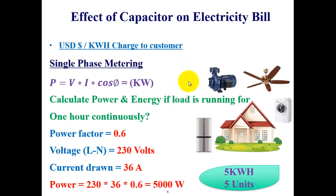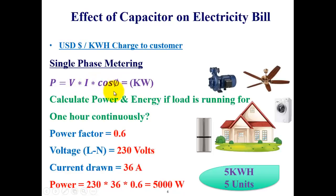Let me explain with a basic example. With no capacitor installed across the supply, consider a house where the voltage is 230 volts, the total current drawn by the load is 36 amperes at a power factor of 0.6. All three quantities can be measured by the energy meter. Multiplying these quantities, the total active power comes out to 5000 watts or 5 kilowatts. Since this load runs for one hour, the house consumes 5 units of electricity.